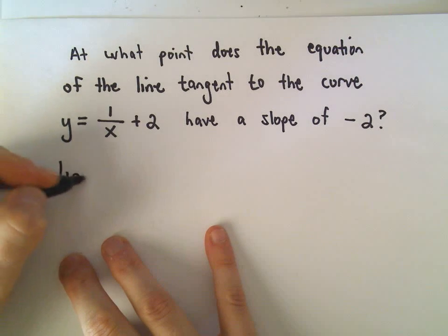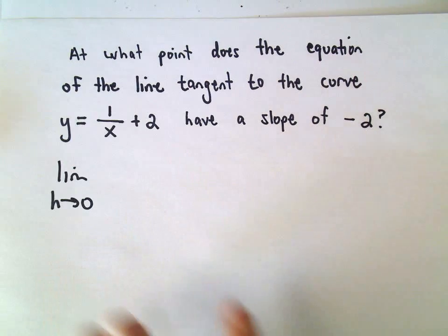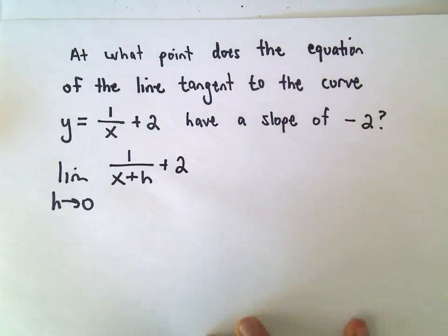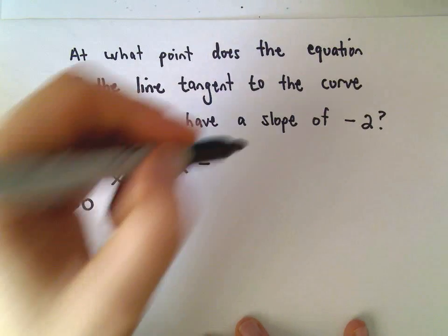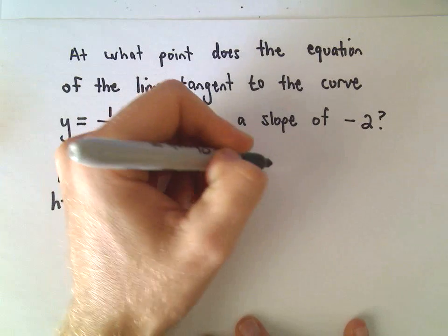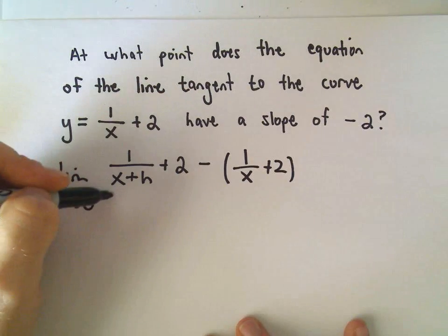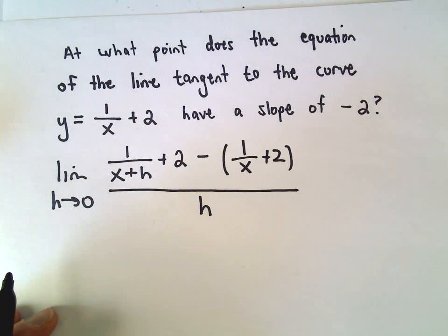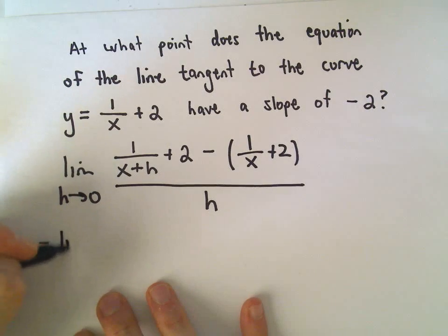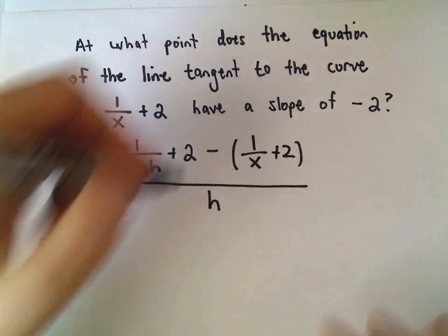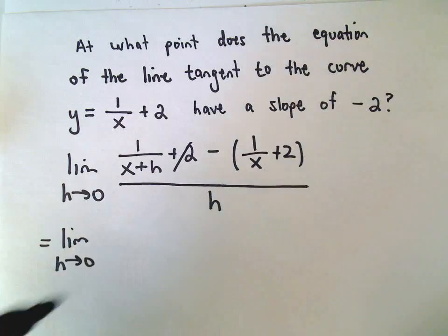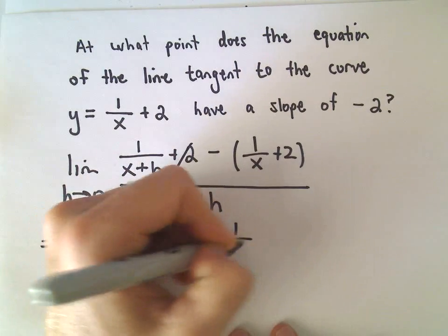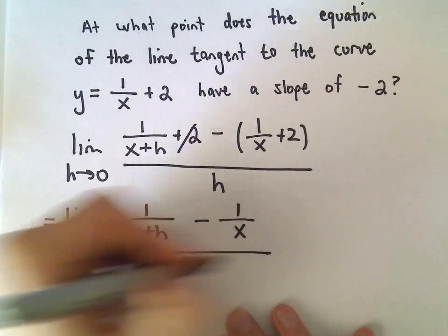To do that we'll take the limit as h approaches 0. We'll have f of x plus h, which will be 1 over x plus h plus 2, minus our original function which is 1 over x plus 2, all over h.